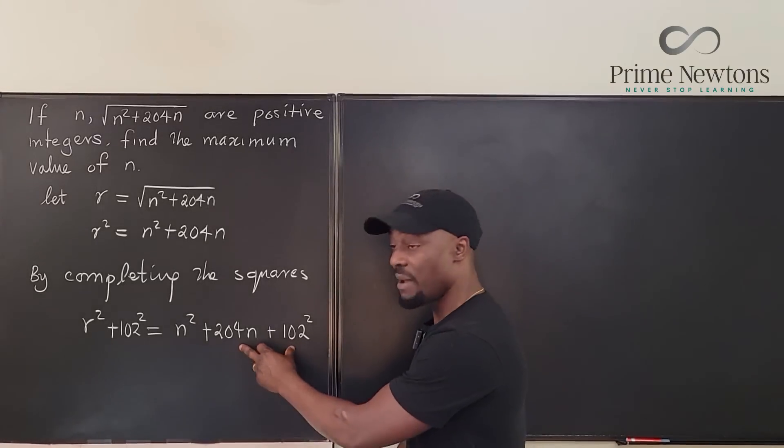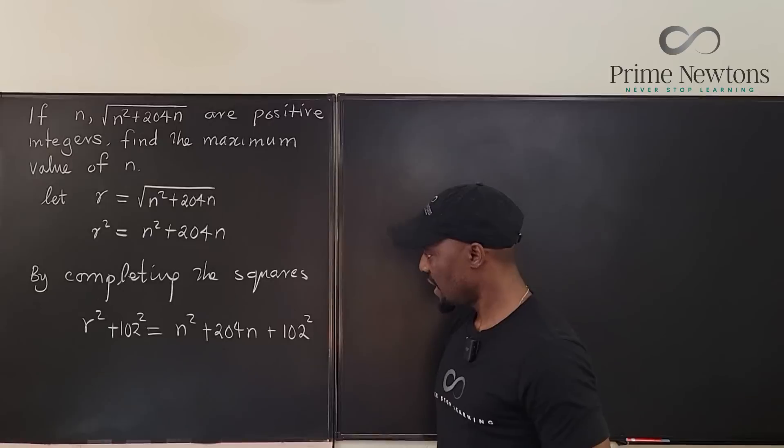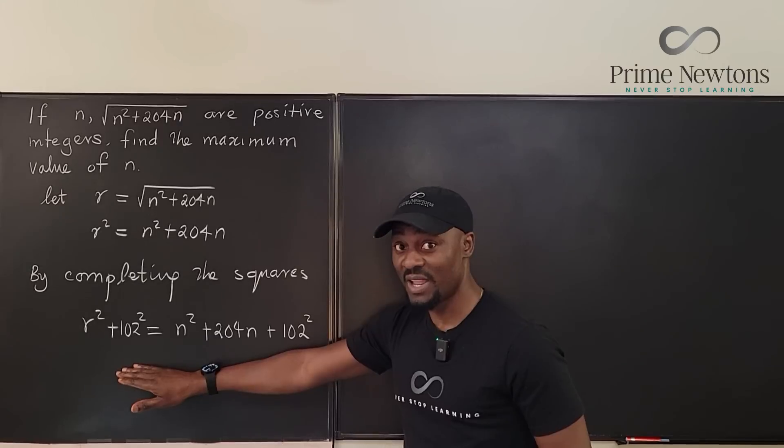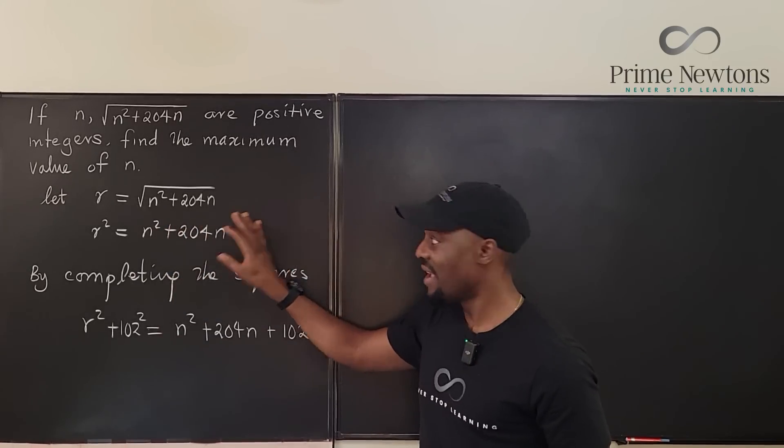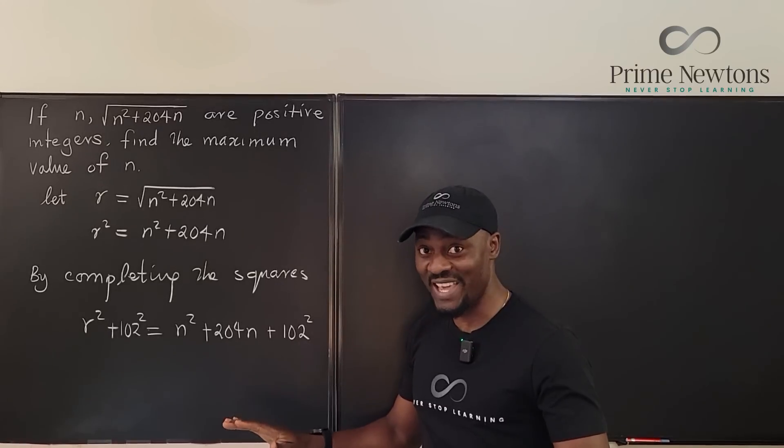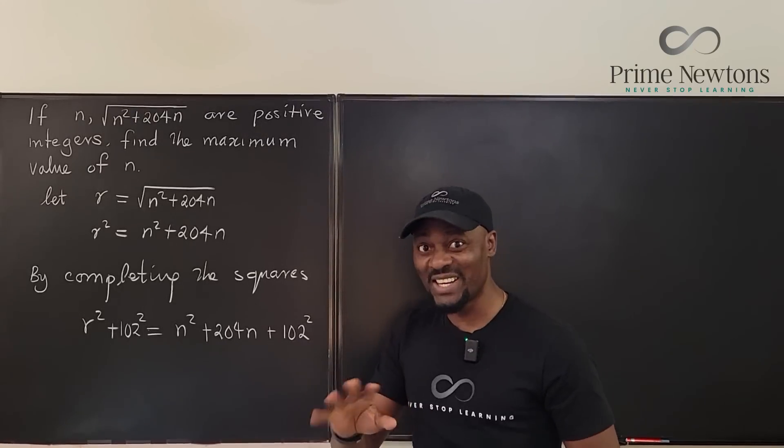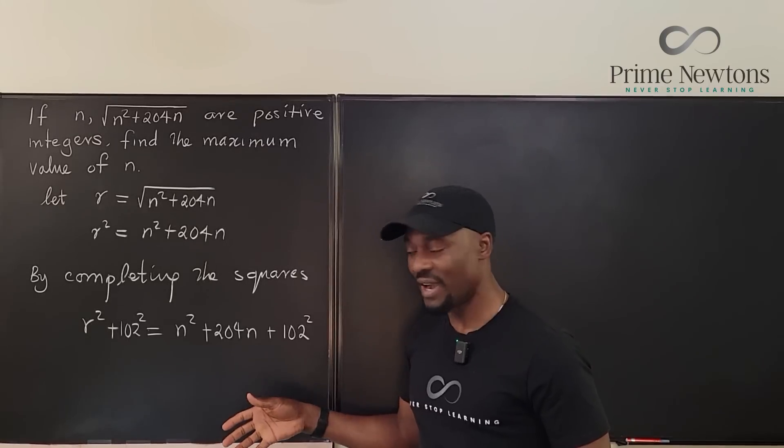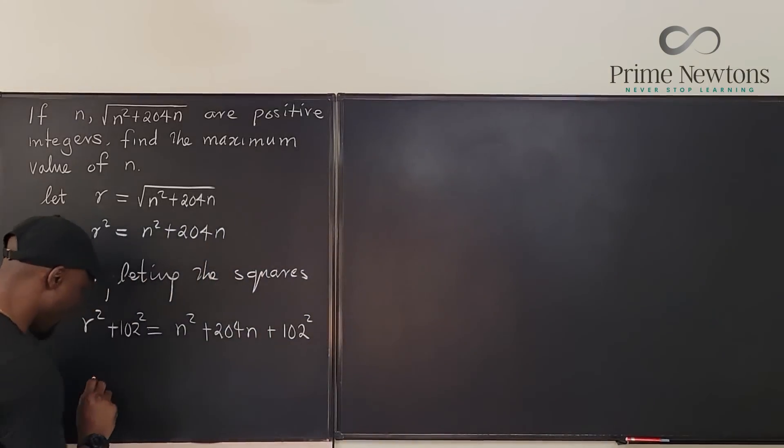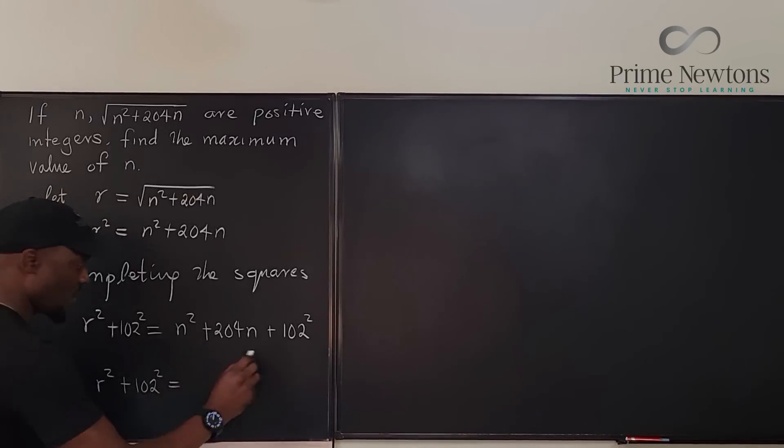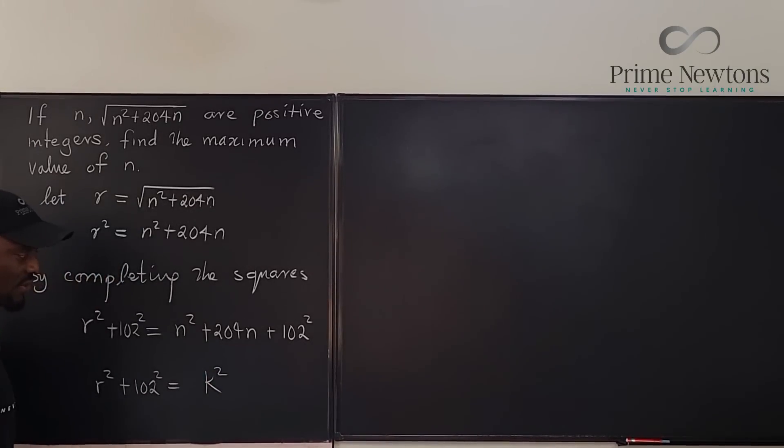So I have a nice equation. Because I've made this a perfect square, remember what we started with is not what we have anymore. I have increased the right hand side. I've also increased the left hand side. So just to make things clearer, we're going to say that r squared plus 102 squared is equal to, let's call this k squared. Let's say this is the square of k. Remember we made it a perfect square. So k is an integer.